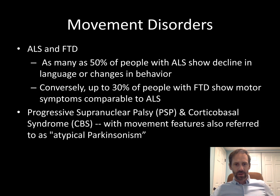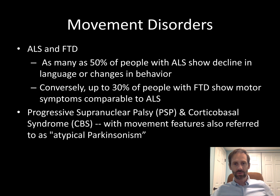Frontotemporal degeneration sometimes goes along with other neurodegenerative diseases. For example, sometimes people with FTD can show motor symptoms along the lines of ALS or amyotrophic lateral sclerosis. ALS is a neuromuscular disorder that causes weakness. Around 50% of people with ALS show changes in language or behavior reminiscent of FTD, and sometimes this goes on to frank frontotemporal degeneration. About 30% of people with frontotemporal degeneration show motor symptoms along the lines of ALS.